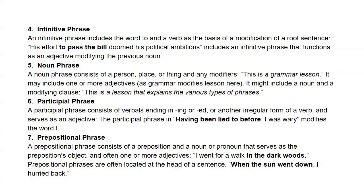For the different phrases, know how to list them and give a definition of each. An infinitive phrase includes the word 'to' and a verb as the basis of modification — 'His efforts to pass the bill doomed his political ambitions' includes an infinitive phrase functioning as an adjective. A noun phrase consists of a person, place, or thing and any modifiers — 'This is a grammar lesson' may include adjectives or a modifying clause.